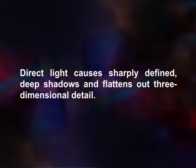Some important point-like sources are the sun, a flash gun, and some forms of interior lighting. Direct light causes sharply defined deep shadows and flattens out three-dimensional detail. A cylinder bathed in direct light will look very similar to a box next to it.